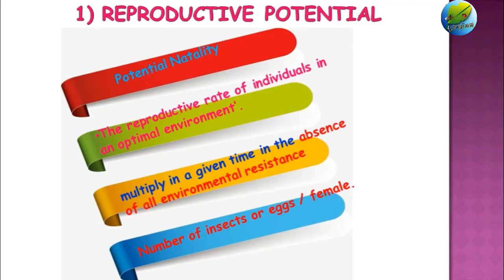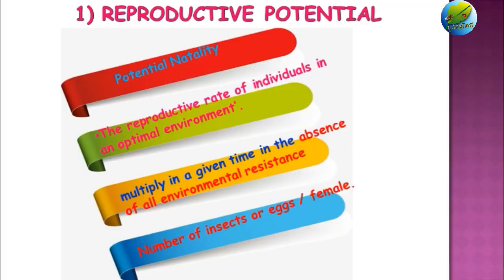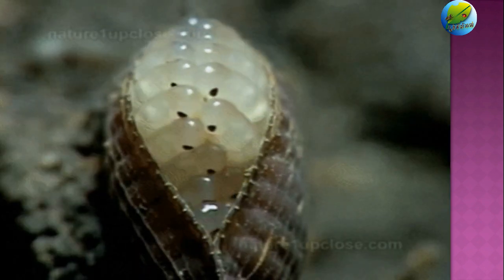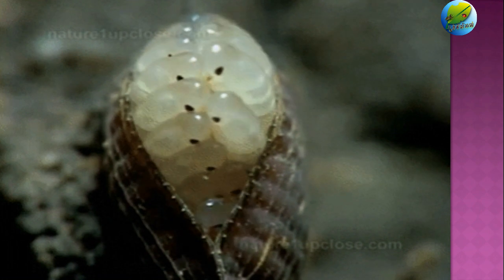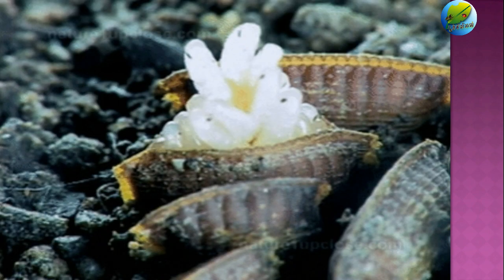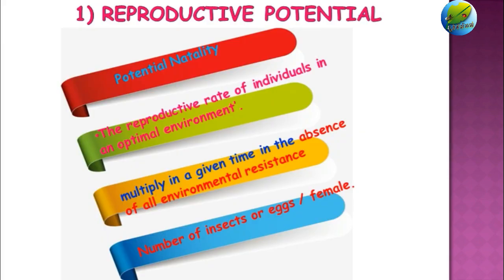It is usually represented by the number of insect eggs or the number of females in an area. It is also called biotic potential, as it is the innate ability of the population to reproduce and survive, depending on the inherited properties of insects such as reproduction and survival.